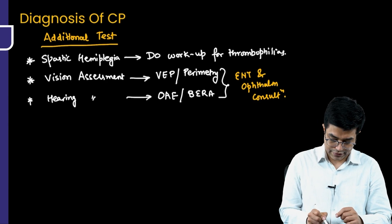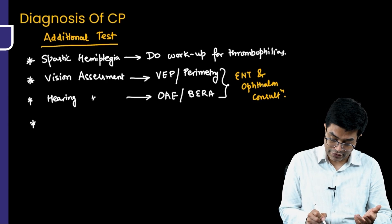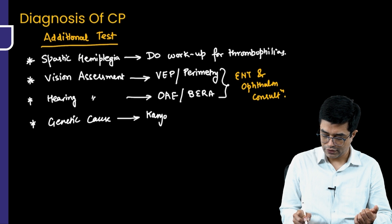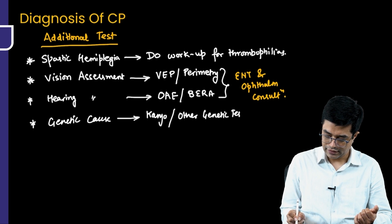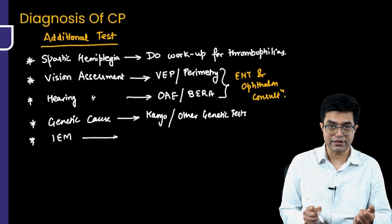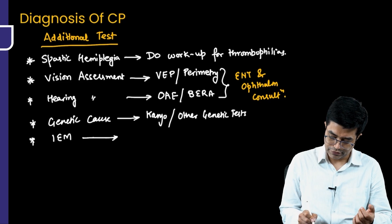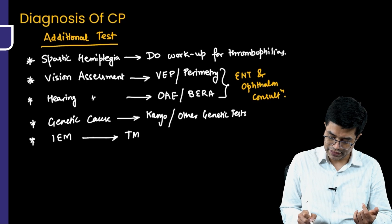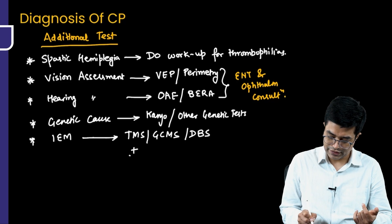If you are suspecting a genetic cause of cerebral palsy, you should perform karyotyping or any other appropriate genetic test. If you are suspecting an inborn error of metabolism as the cause, you should check urine for organic acidemia, perform TMS, GCMS, and dried blood spot sampling, and consider MR spectroscopy in these patients. These are the additional tests that need to be performed.